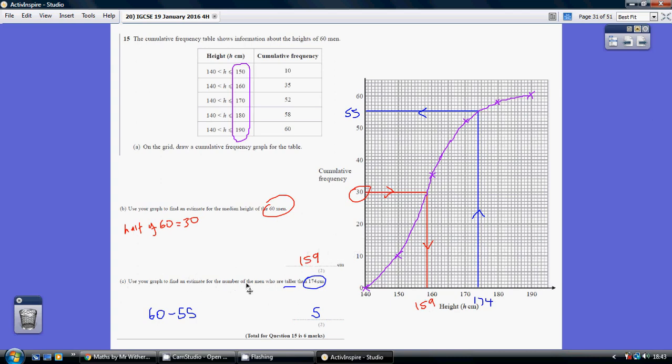Now, use your graph to find an estimate for the number of men who are taller than 174. So start off on the height. Here's my 174. Go up and I hit a reading of 55. I need the number who are taller than this, not smaller, taller. So it's these five here. 60 less 55, which is 5.